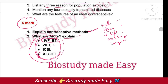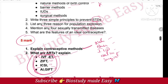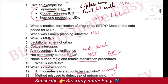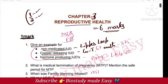If you look at the exam questions, you can see topics like IVF (In Vitro Fertilization), GIFT (Gamete Intra-Fallopian Transfer), and ICSI (Intra-Cytoplasmic Sperm Injection). These are ART methods covered in Chapter 3, Reproductive Health.